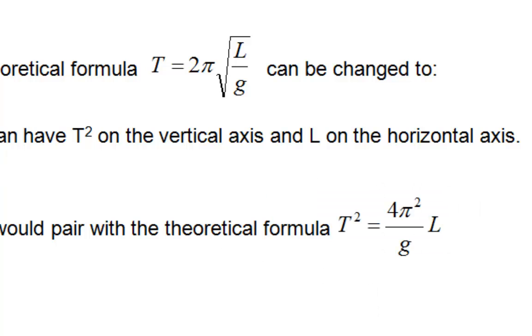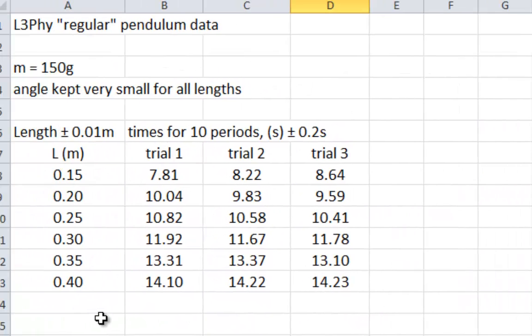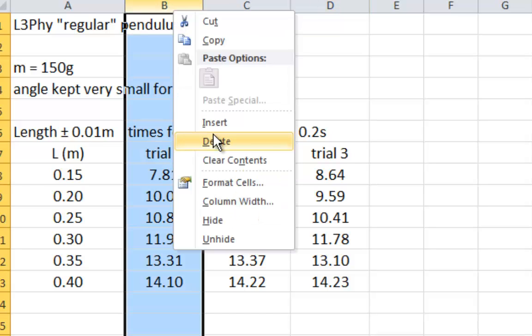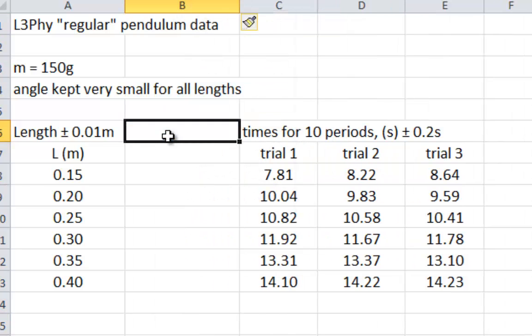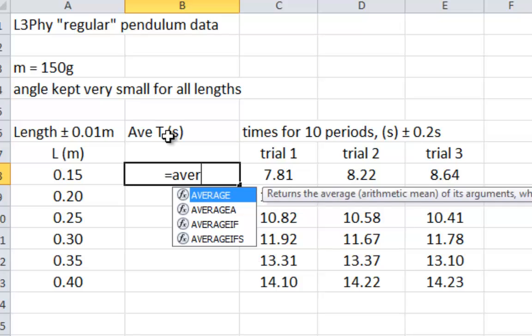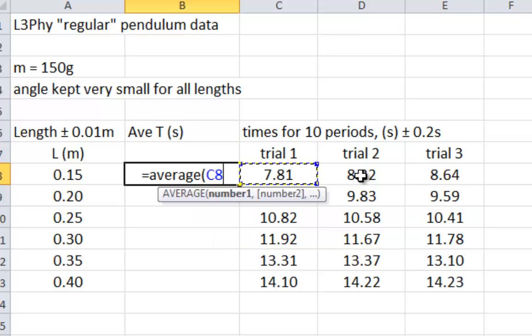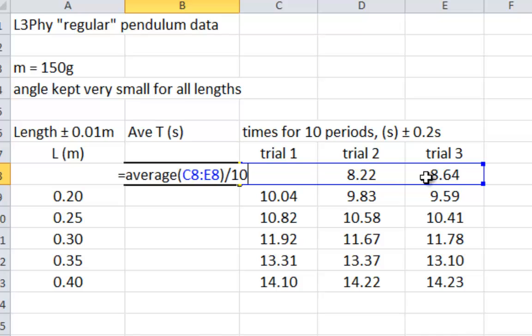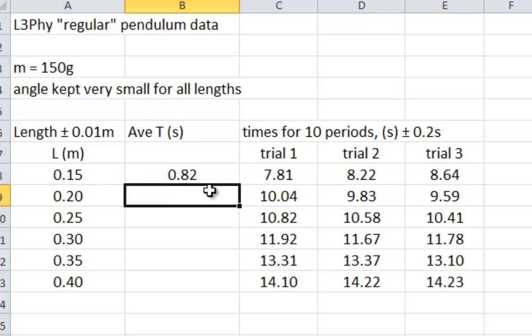So, here we go from scratch. Here's the original data that the other video has. You might want to look at that. But here we're going to basically just insert a column. We're going to work out the average T. That's going to be in seconds. We do not need to find the average of these three numbers. We can just go straight to the average, and divide by 10, because these are for 10 circles. That's our average T.